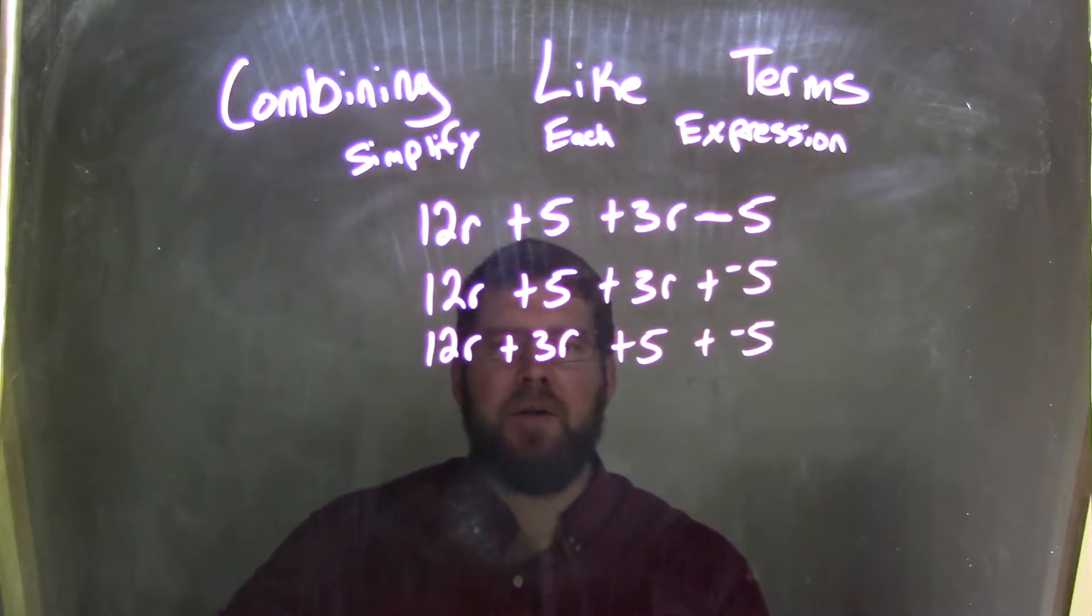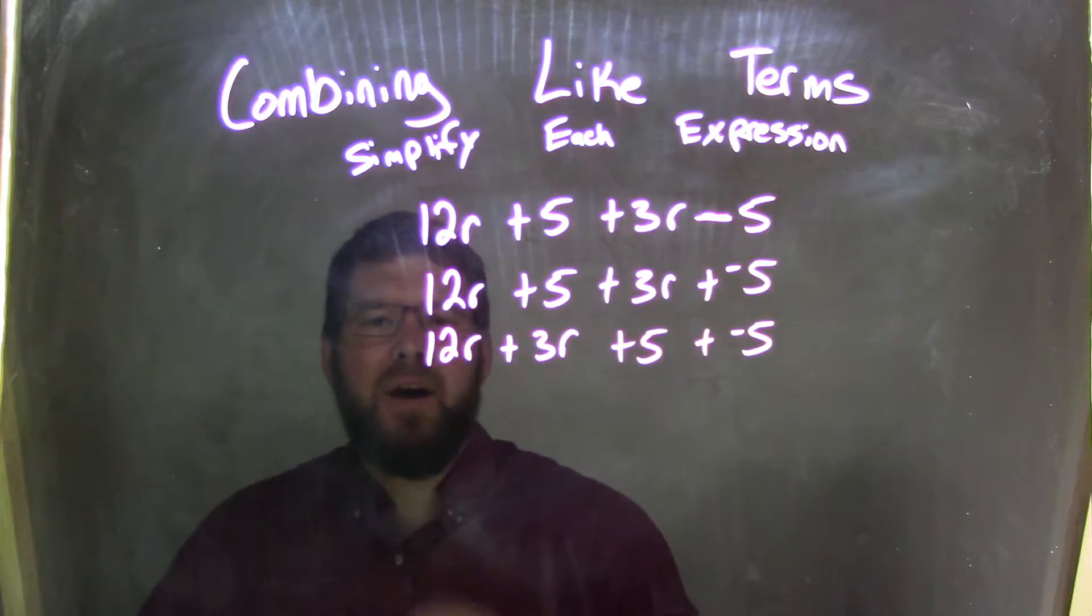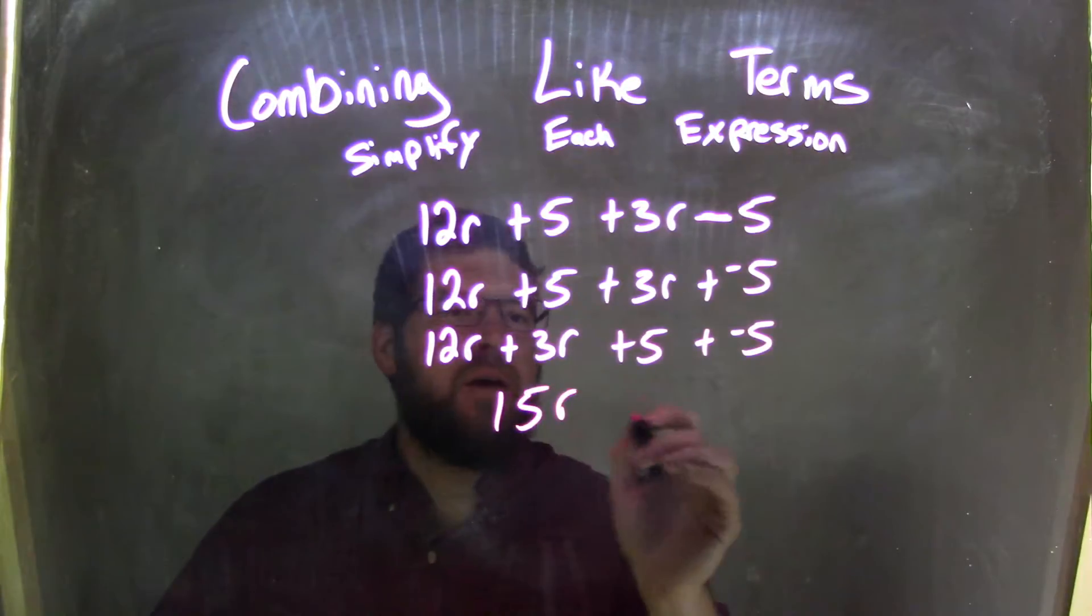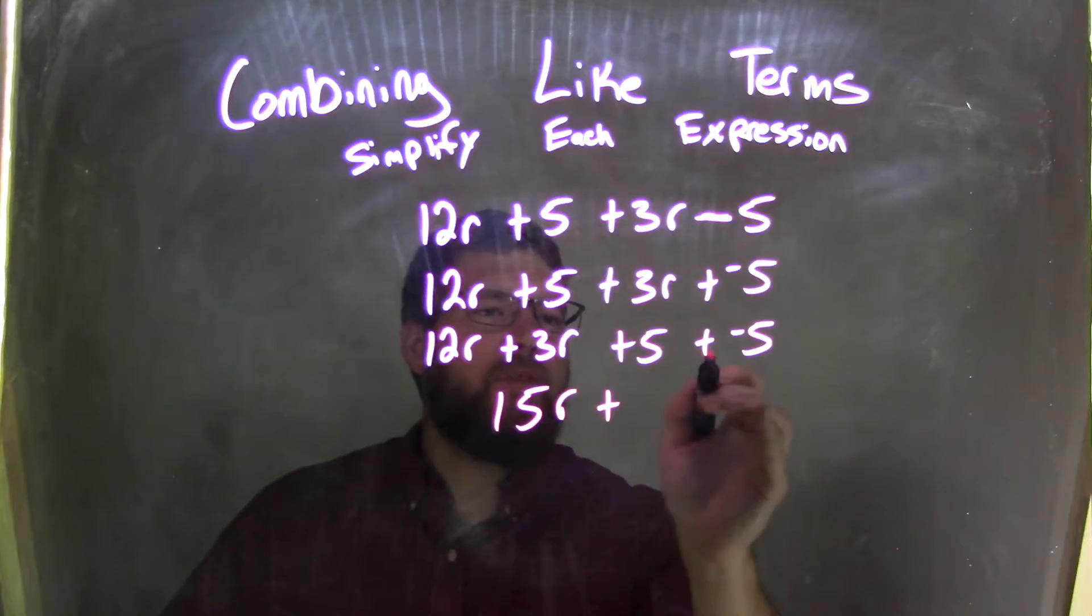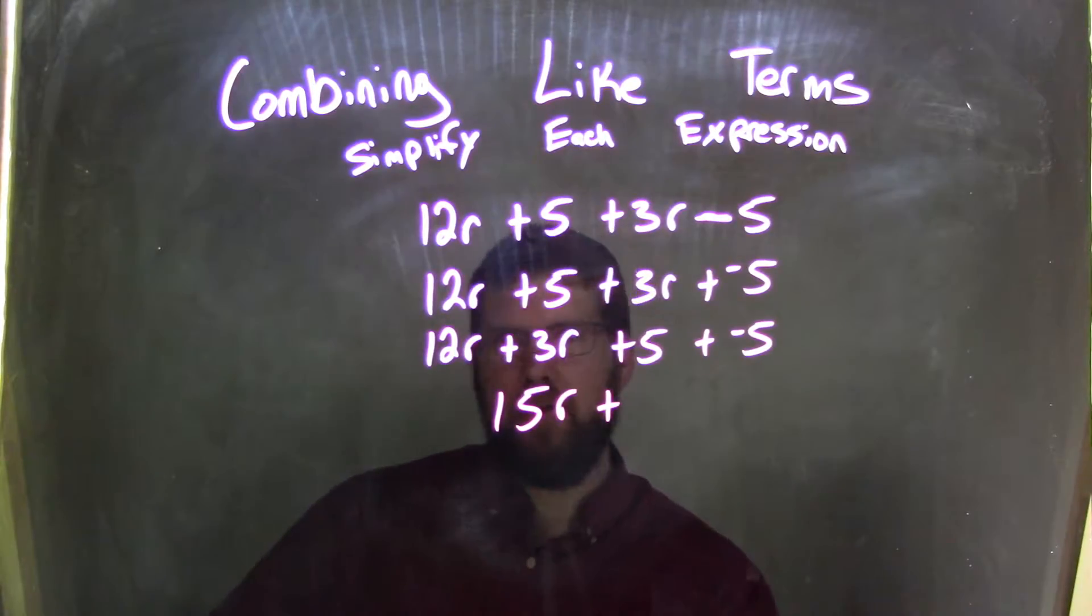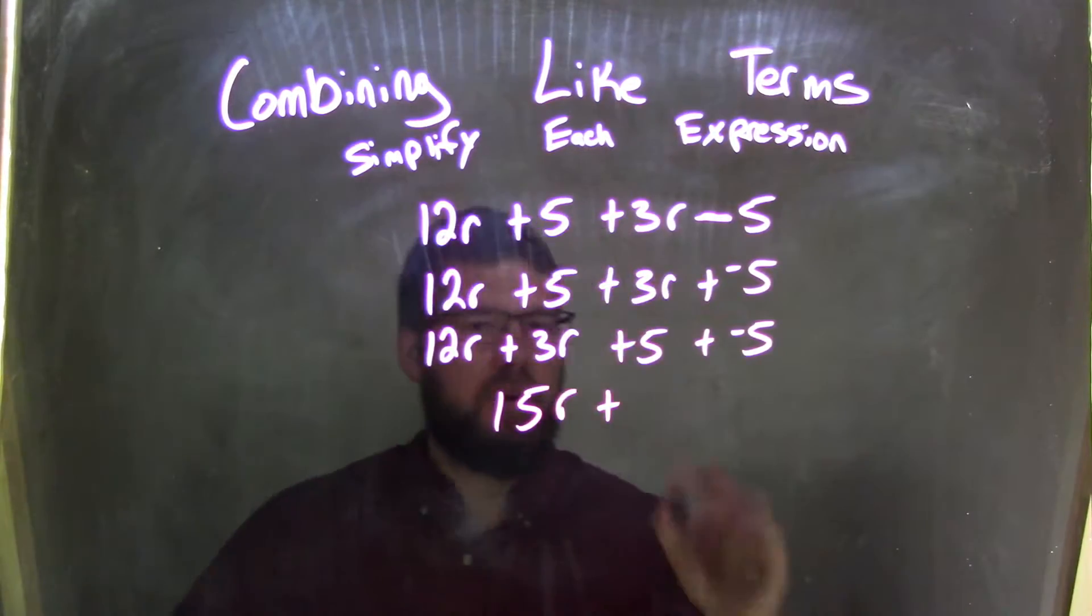So now let's combine our like terms. 12r plus 3r is just 15r. And 5 plus negative 5, well,